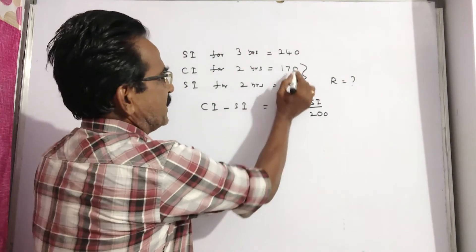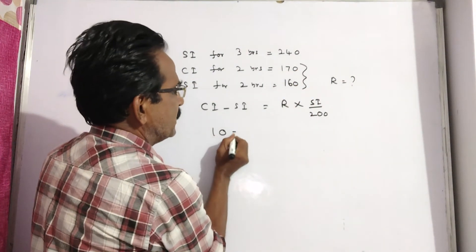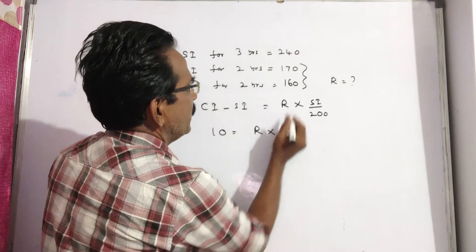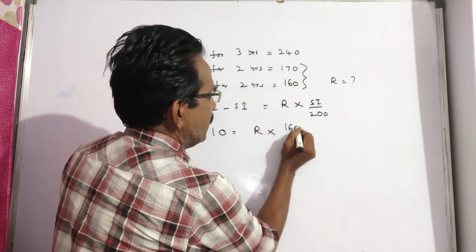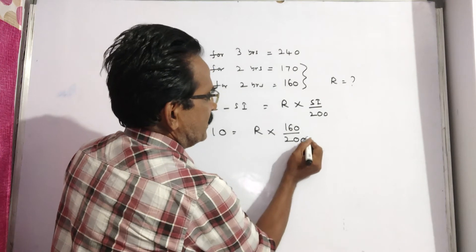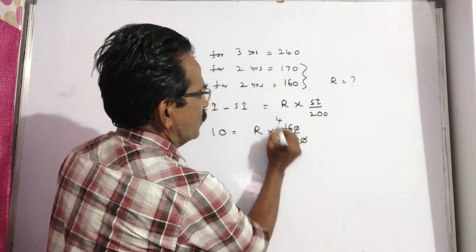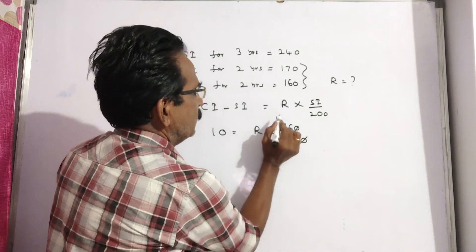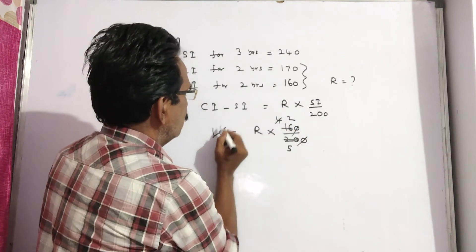CI minus SI, 170 minus 160, 10 is equal to R into SI, 160 by 200. See, 0, 0 gets cancelled, 4s, 5s, 2s, 5s.